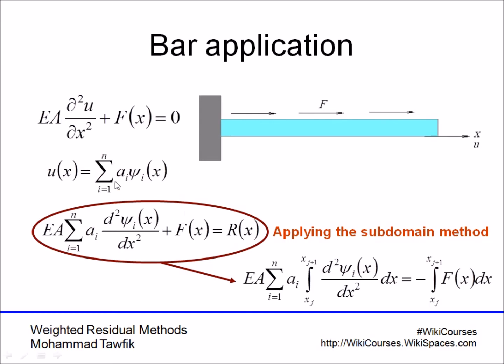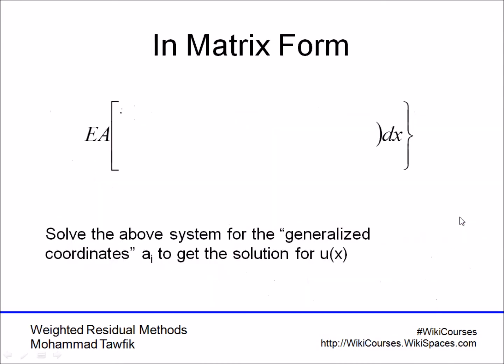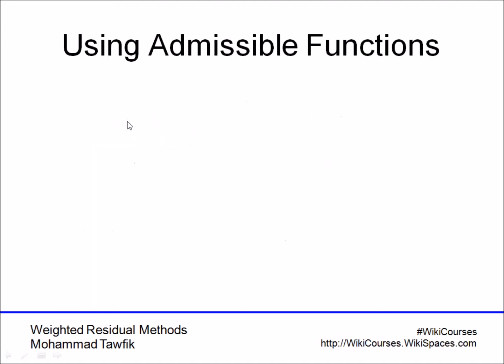Now, you also have to integrate the function f of x from xj to xj plus 1, and you end up with a matrix, or a set of equations, in which kij is the integration of the second derivative of psi i, from xj to xj plus 1.